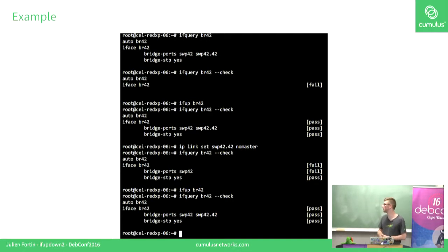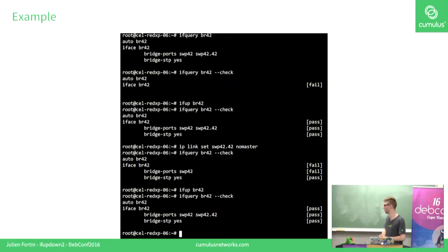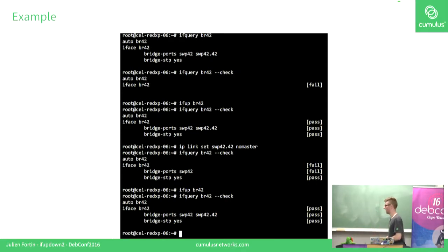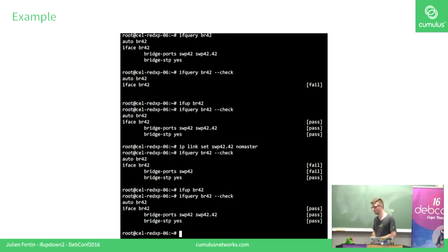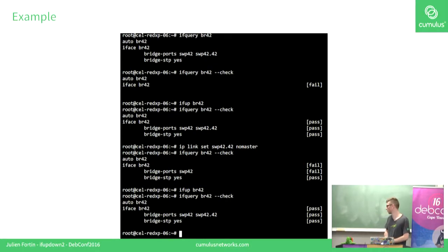Here's the example. I have a bridge; if I run ifquery --check on the bridge, it tells me it failed because the bridge is not up yet. Then I do ifup, check again, and everything passes. Then I remove one of the bridge ports with iproute2 and run check again — it fails and tells me what is wrong. But if I do ifup again, it applies the delta between the user configuration and the running configuration and adds the missing bridge port.